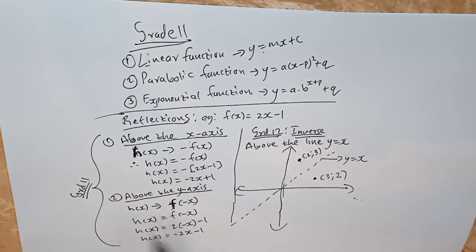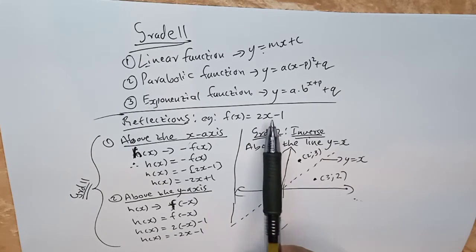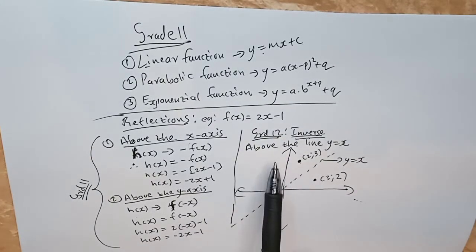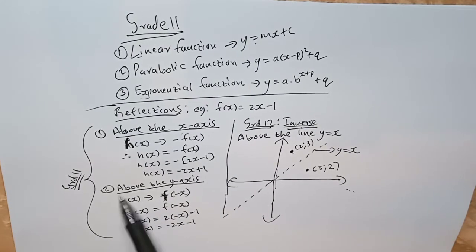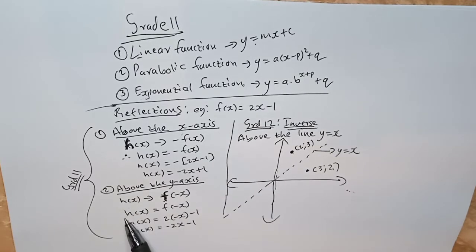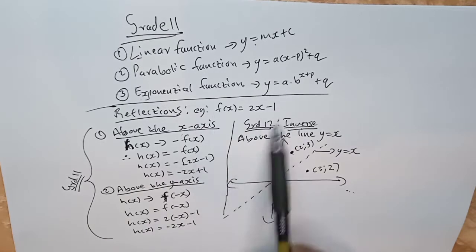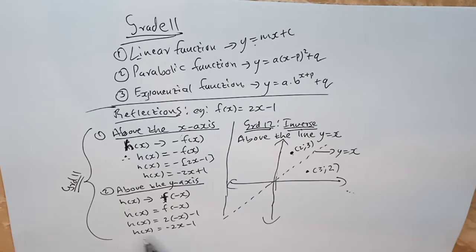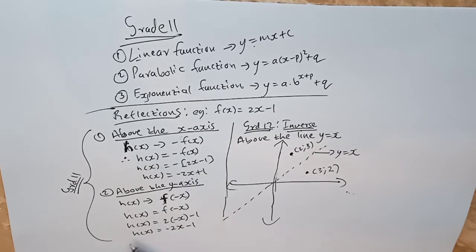Now if you want to reflect above the y-axis, you substitute every x variable in the function with negative x — basically multiplying x by negative. So h(x) equals f(−x). Where you see x, substitute it with negative x. Therefore h(x) equals negative 2x minus 1. That is your new function. This is all from grade 11.